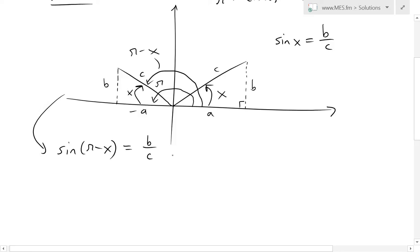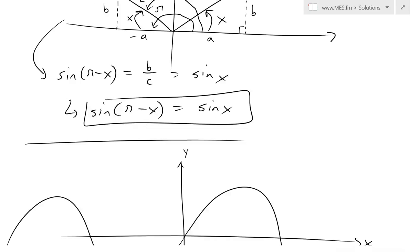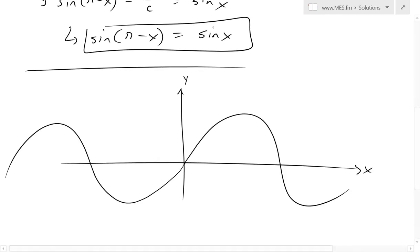So this equals sine of x — it's the same thing. We've just proven that sine of pi minus x equals sine of x. Now to illustrate this further, if we look at this graph, this is just sine of x. The sine graph goes from zero, goes up and down, where the highest height is one and the lowest height is negative one.